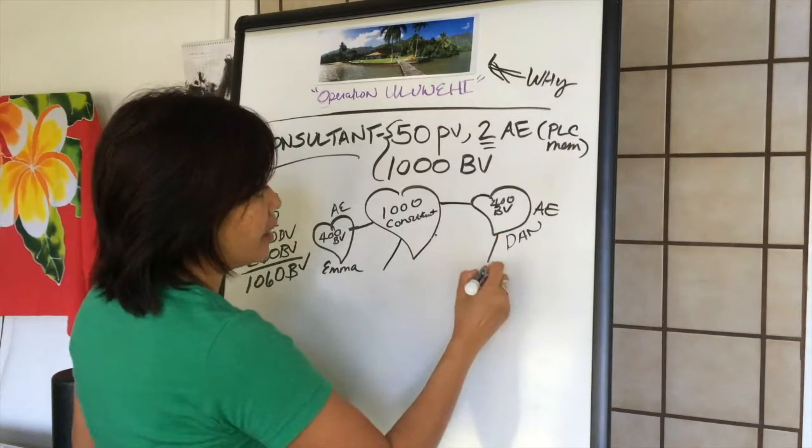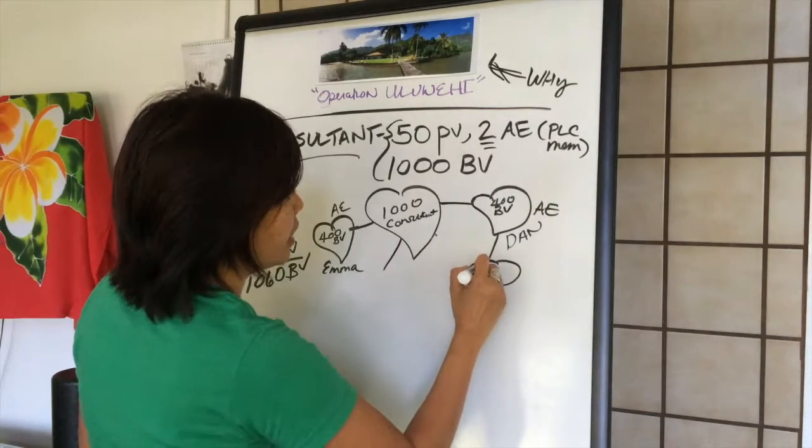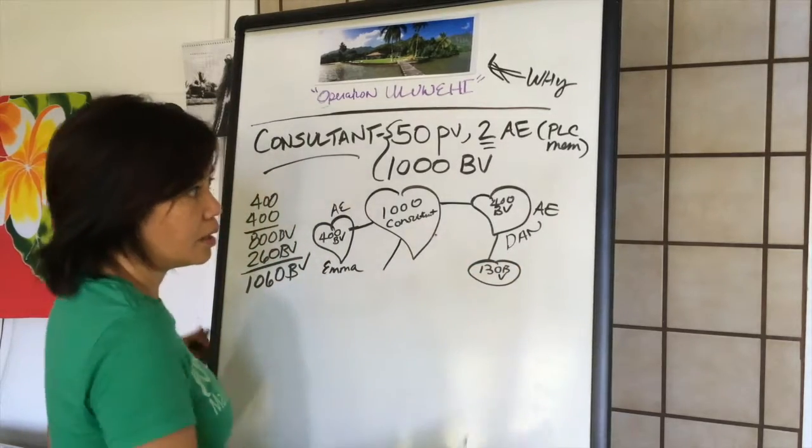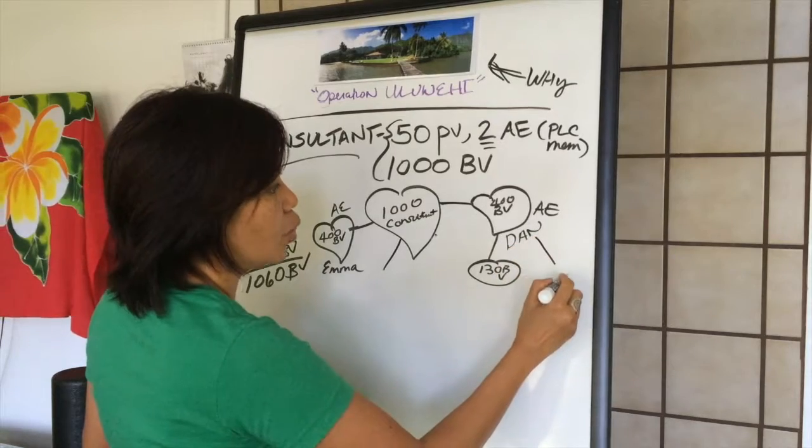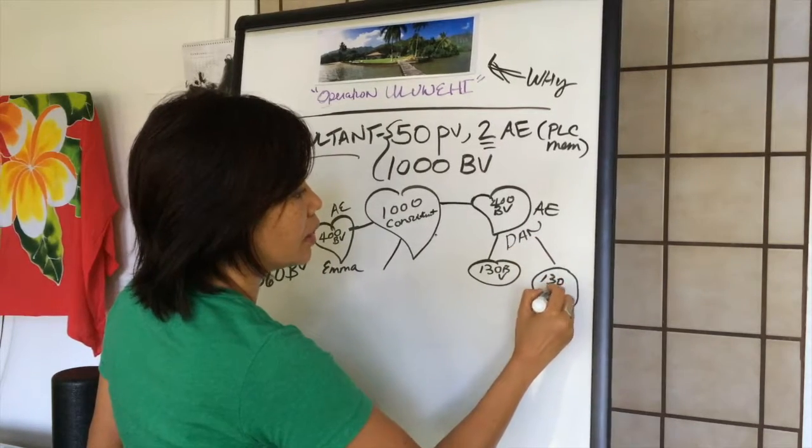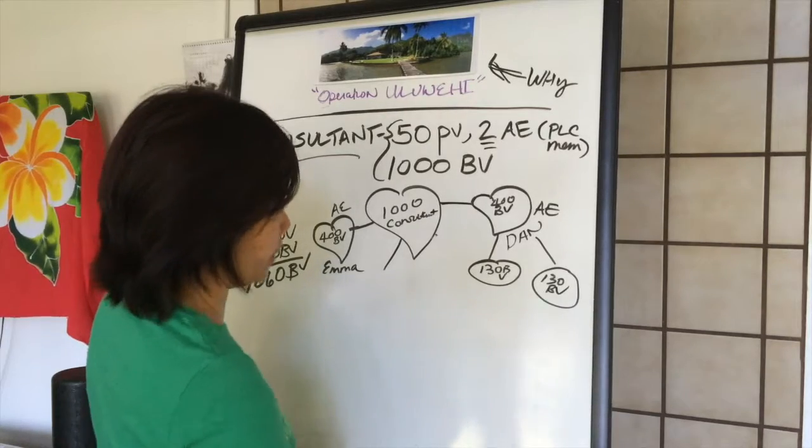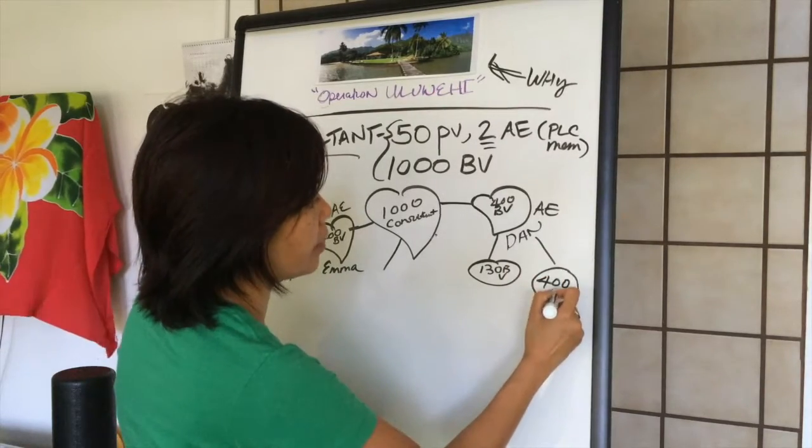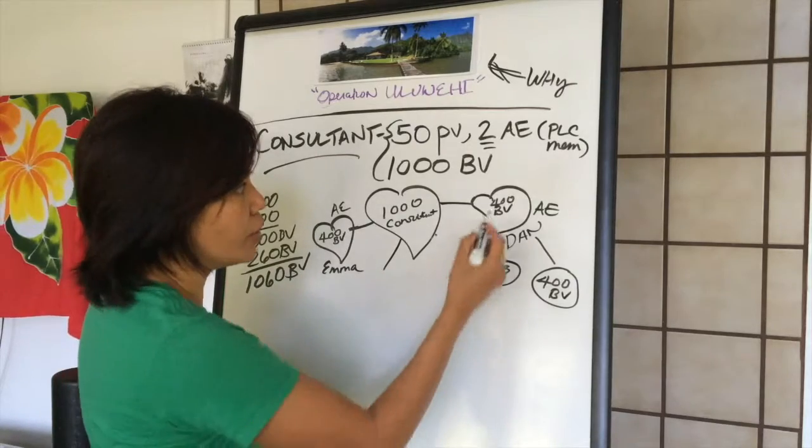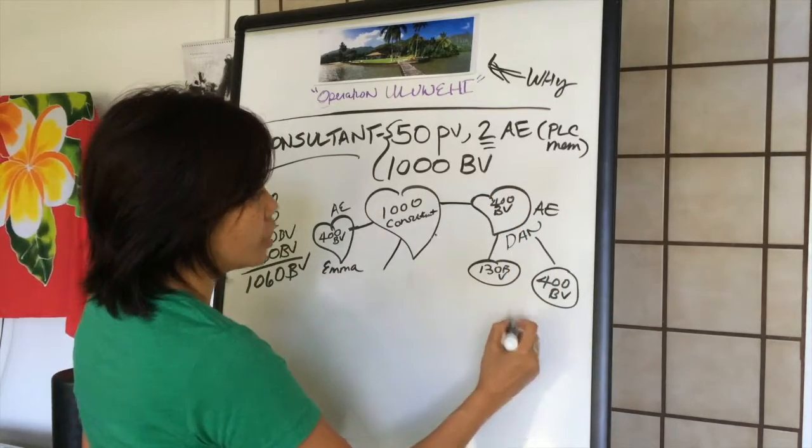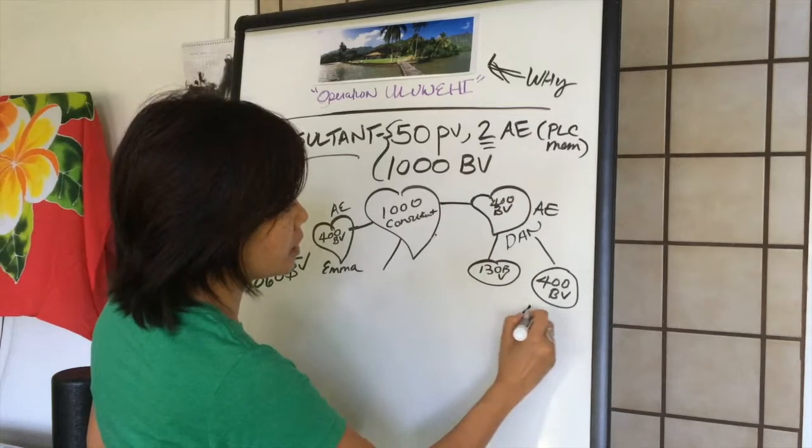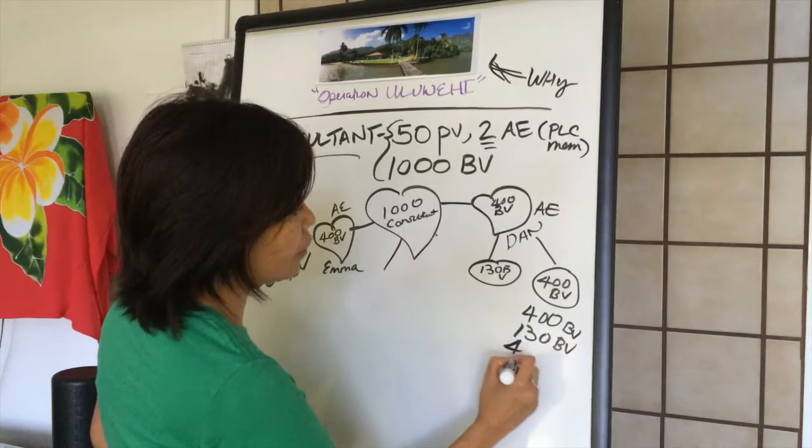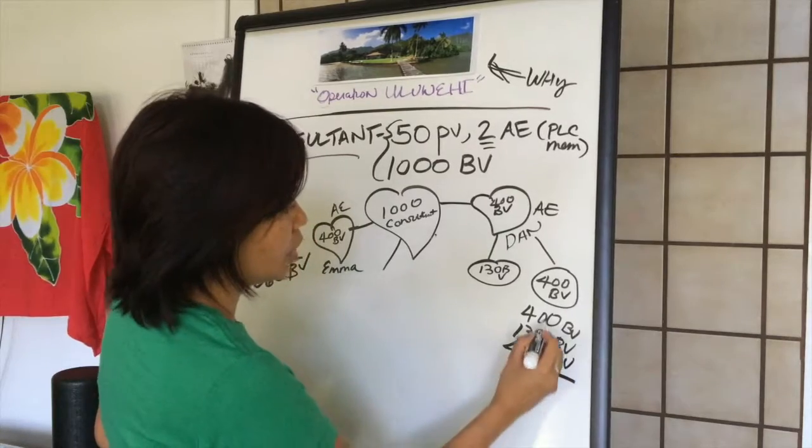And say for instance Dan has a really good buddy who wants to do a getting started. The getting started again is 130 BV. And maybe Dan has another buddy who wants to do another getting started pack. Or heck, maybe that buddy wants to do a platinum pack just like him. In fact, even better. Because look, so now we're concentrating on Dan. So Dan has now brought in, let's see, he's got his own 400 BV, 130 BV, and another 400.